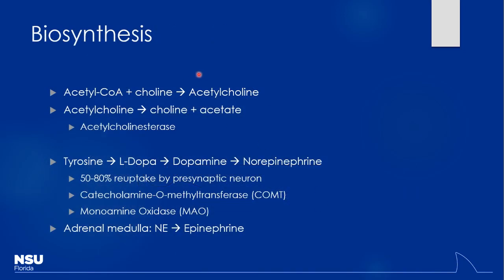Where do we get acetylcholine from? Basically, acetyl-CoA and choline come together to form acetylcholine. How does it get broken down? Acetylcholinesterase — an enzyme that breaks it down into acetate and choline. The choline gets recycled back into the neuron; we can put it back into a vesicle, recycle it back into acetylcholine and get better use out of it. This enzyme is really important. If I were to decrease the activity of acetylcholinesterase, I'd have more acetylcholine around, which means a stronger response from the parasympathetic nervous system.